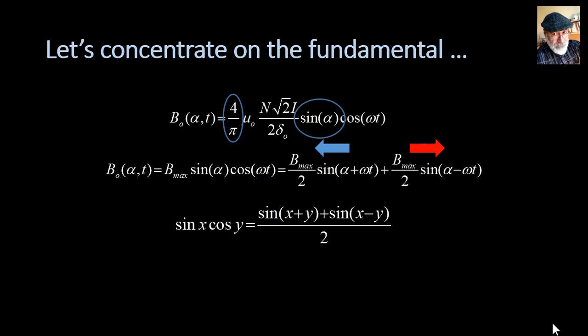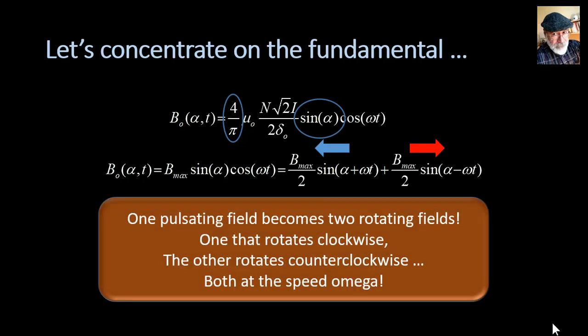One of them is rotating clockwise and the other counterclockwise, both with a velocity omega radians per second. And that is a tremendous finding. One current sinusoidal in one coil creates a pulsating magnetic field, but we can see that pulsating magnetic field as two rotating magnetic fields that have the same velocity but opposite directions.